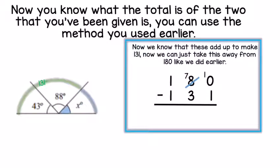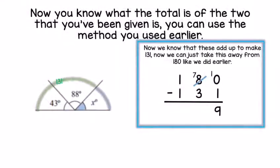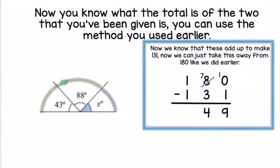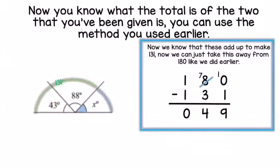We can use this number with our earlier method to find the missing angle. We'll do 180 take away our total number, which was 131. We cannot do 0 take away 1, so we need to borrow. The 8 gets swapped to make a 7, carry over the 1 to make 10. 10 take away 1 is 9, 7 take away 3 is 4, and 1 take away 1 is 0. The missing angle is 49 degrees.